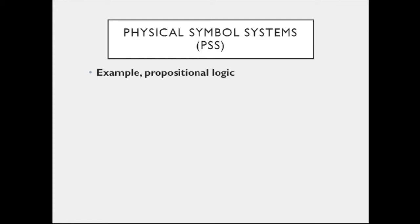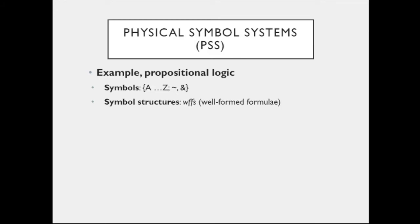I don't know if you've taken formal logic, but a usual example is the language of propositional logic. The symbols would be the atomic propositions, which can be any letter from A to Z — these usually stand for sentences — as well as the tilde and the ampersand, which are used for negation and conjunction respectively. If you put the atomic letters together according to rules to make longer sentences, you have what is called well-formed formulae, or WFFs in the jargon. This corresponds to symbol structures, since they are composed of the symbols.